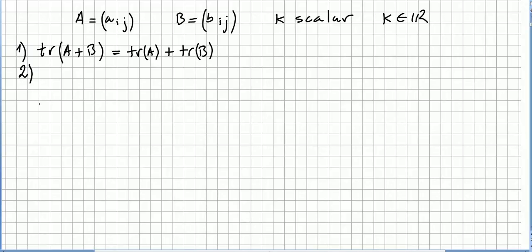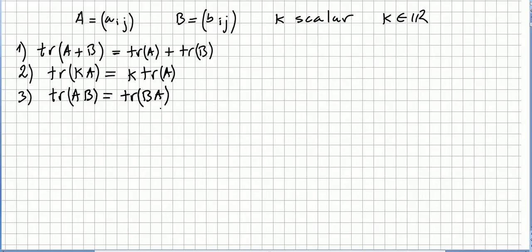Second property: the trace of KA, where K is a scalar and A is a matrix, is the same as K times the trace of A. Third property: the trace of A times B is the same as the trace of B times A. These three are the main properties about the trace of a matrix.